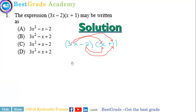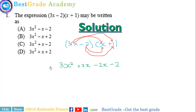We expand to obtain: 3x times x will give us 3x squared. Then 3x times 1 will give us 3x. Then this will give us negative 2x and this will give us minus 2. So we simplify to obtain 3x squared; 3x minus 2x will give us plus x.